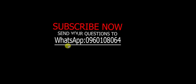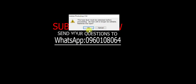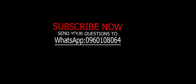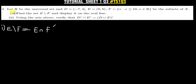Today we are solving question three from tutorial sheet one. When you read through the question, it says: let R be the universal set, D and E be defined as given, and F equals {x : x ≤ 10, where x is a member of the real numbers}.